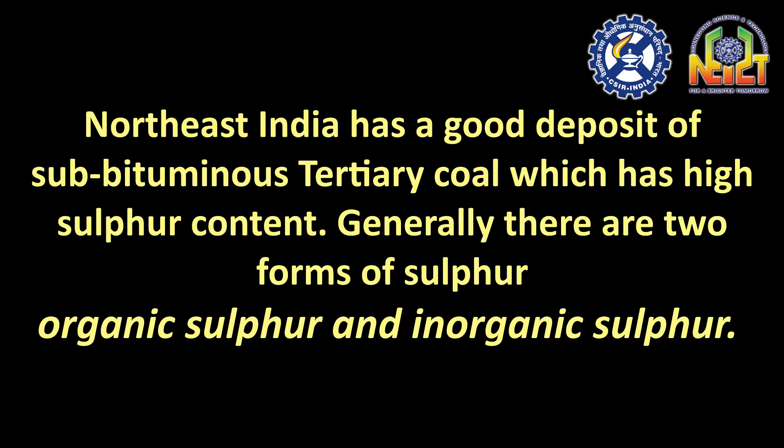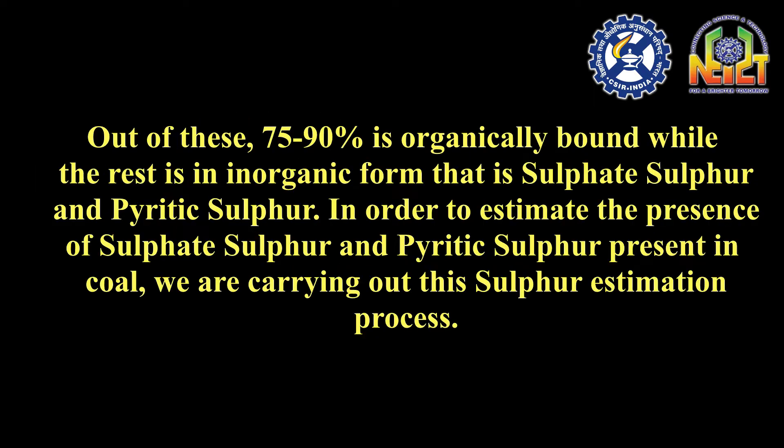Northeast India has a good deposit of sub-bituminous tertiary coal, which has high sulfur content. Generally there are two forms of sulfur: organic sulfur and inorganic sulfur. Out of these, 75 to 90% is organically bound, while the rest is in inorganic form — that is sulfate sulfur and pyritic sulfur.